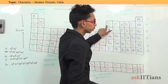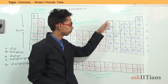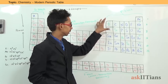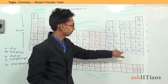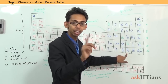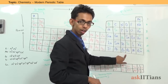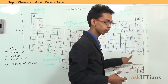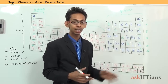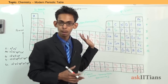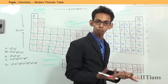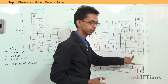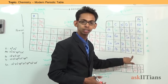The group 13 elements are known as the boron family, named after the first element. Group 14 is the carbon family, group 15 is the nitrogen family, and group 16 is the oxygen family, also known as chalcogens. The elements of group 17, the fluorine family, are known as halogens because they are salt-forming — whenever they combine with metals, they form salts, just like sodium chloride. That is why they are called halogens.